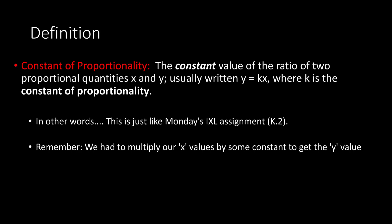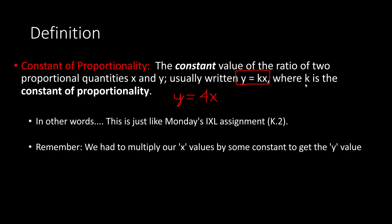Constant of proportionality: it's the constant value of the ratio of two proportional quantities x and y, usually written as y = kx, where k is the constant of proportionality. We did this yesterday — you had to write an equation something like this. The only difference is we have a four here and a k there. k is just a number, so for y = 4x, the constant of proportionality is 4; k equals 4.